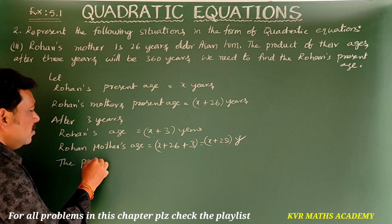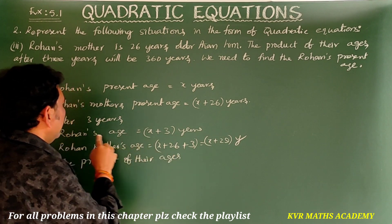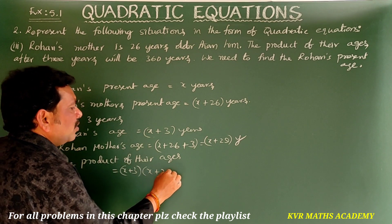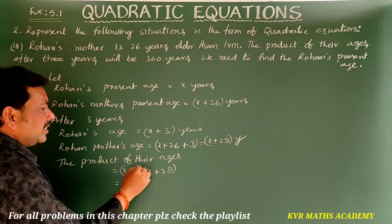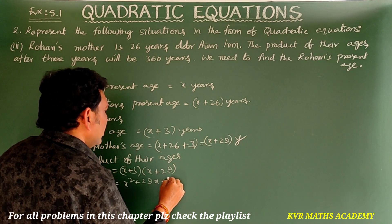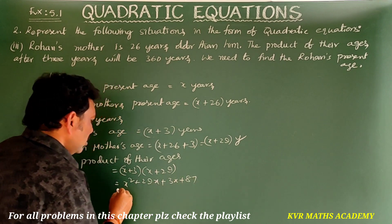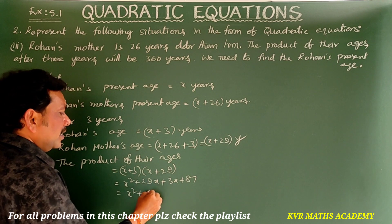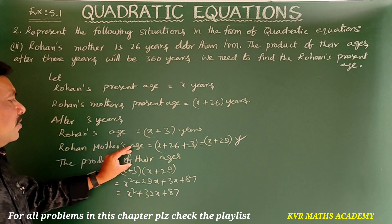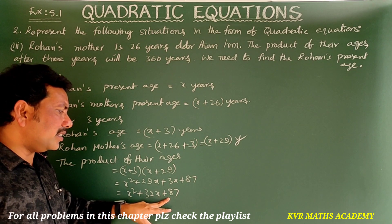The product of their ages after 3 years is (x + 3)(x + 29). Expanding: x × x = x², x × 29 = 29x, 3 × x = 3x, and 3 × 29 = 87. So the product equals x² + 32x + 87. This is the product of Rohan's and his mother's ages after 3 years.